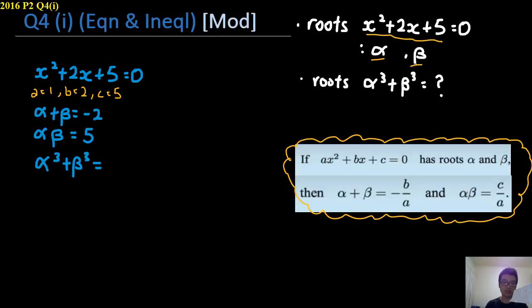From my experience I can tell if you want to get alpha cube plus beta cube, you must find alpha squared plus beta squared. Just as if you want to find alpha to the power of 4 plus beta to the power of 4, you need alpha cubed plus beta cubed. Let's write this out first.